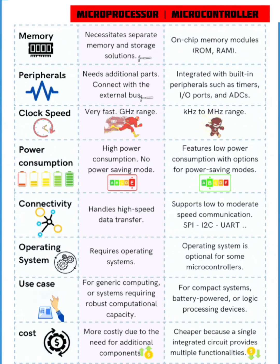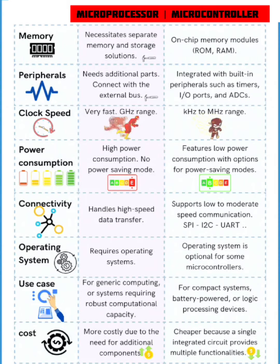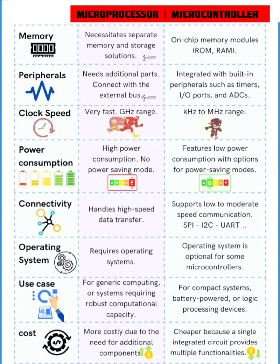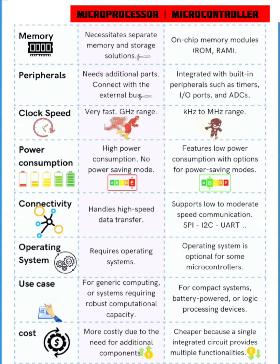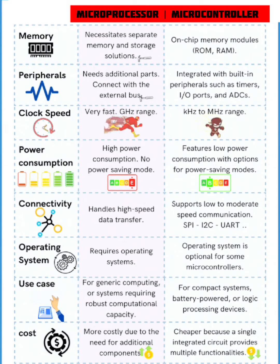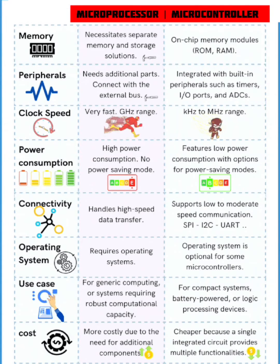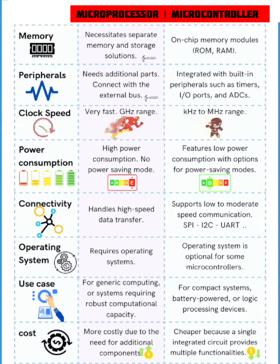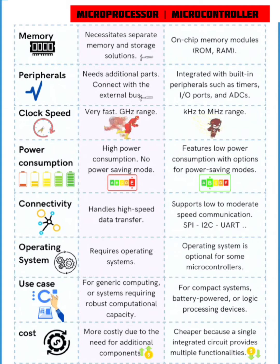Welcome back to Explore Electronics. Let us have a quick look at the differences between microprocessor and microcontroller. Starting with memory: microprocessor requires separate memory and storage solutions, whereas in microcontroller, on-chip memories are present.